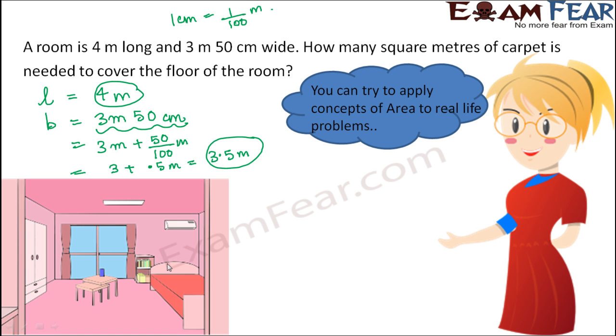So how much carpet do you need to cover the floor? When you talk about carpet, you actually talk about the total area of the floor. Therefore, the area of the floor would be equal to length into breadth. So length is 4 meters, breadth is 3.5 meters. So 4 into 3.5, this gives 14 meters square. So 14 meters square of carpet is needed to cover the floor. 14 meters square is also read as 14 square meters. Meters square and square meters refer to the same thing.